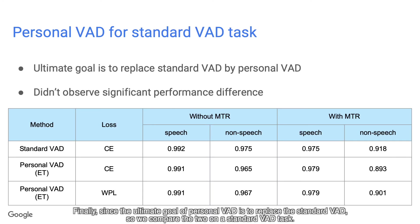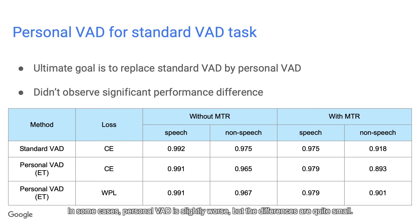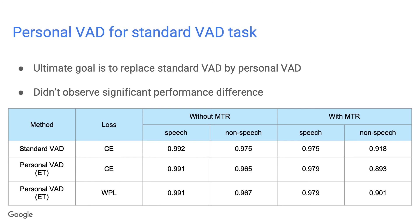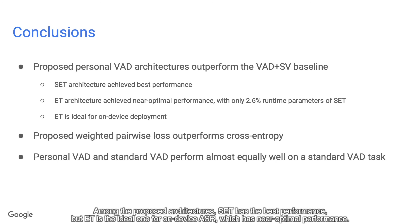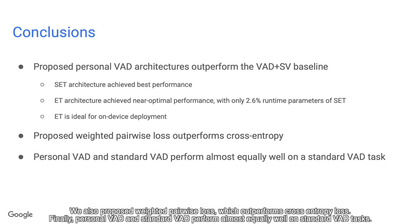Finally, since the ultimate goal of Personal VAD is to replace standard VAD, we compare the two on a standard VAD task. In some cases Personal VAD is slightly worse, but the differences are quite small. Conclusions: the proposed Personal VAD architectures outperform the baseline of directly combining VAD and speaker verification. Among the proposed architectures, SET has the best performance, but ET is the ideal one for on-device ASR with near optimal performance. We also proposed weighted pairwise loss, which outperforms cross-entropy loss. Personal VAD and standard VAD perform almost equally well on standard VAD tasks.